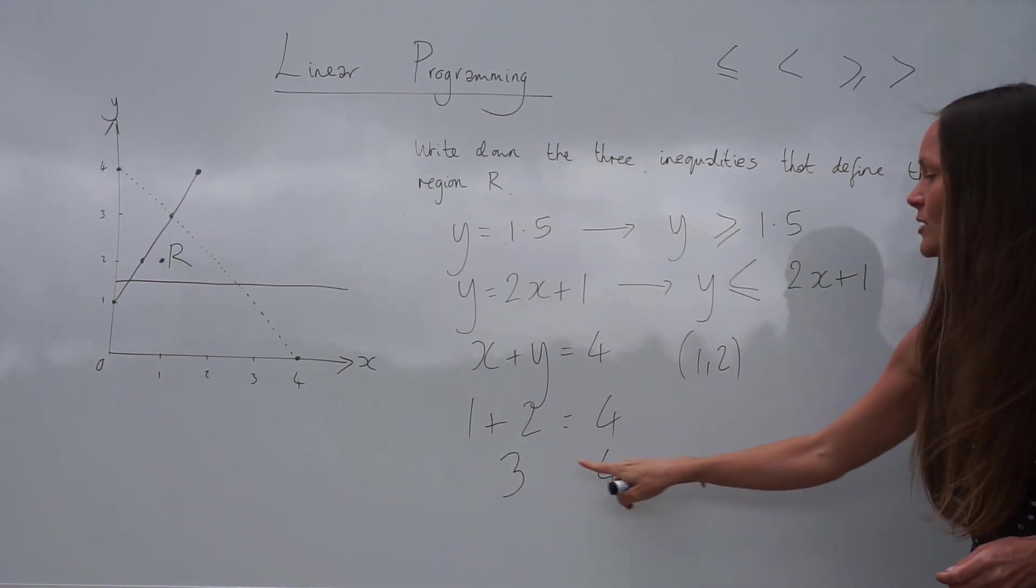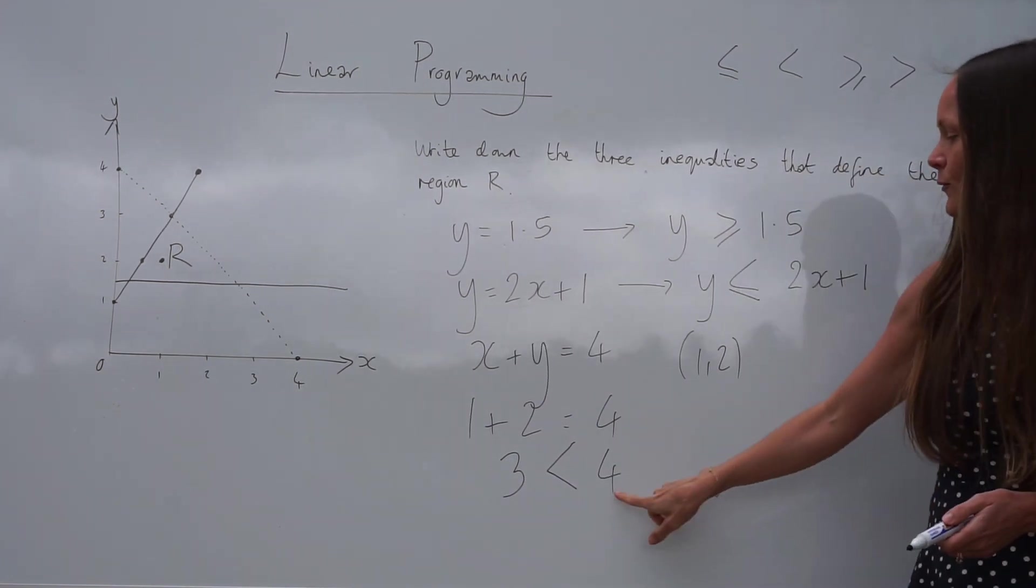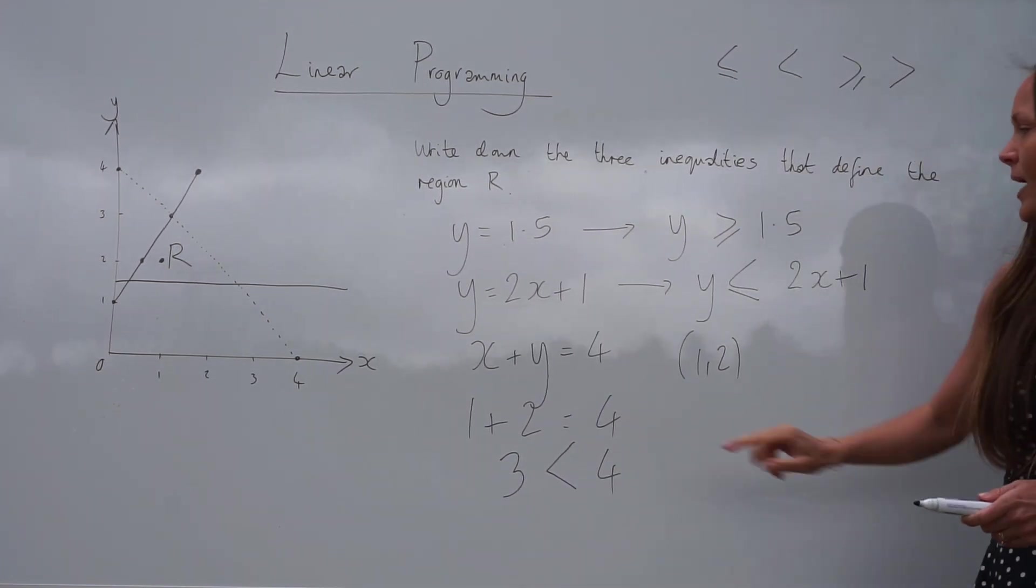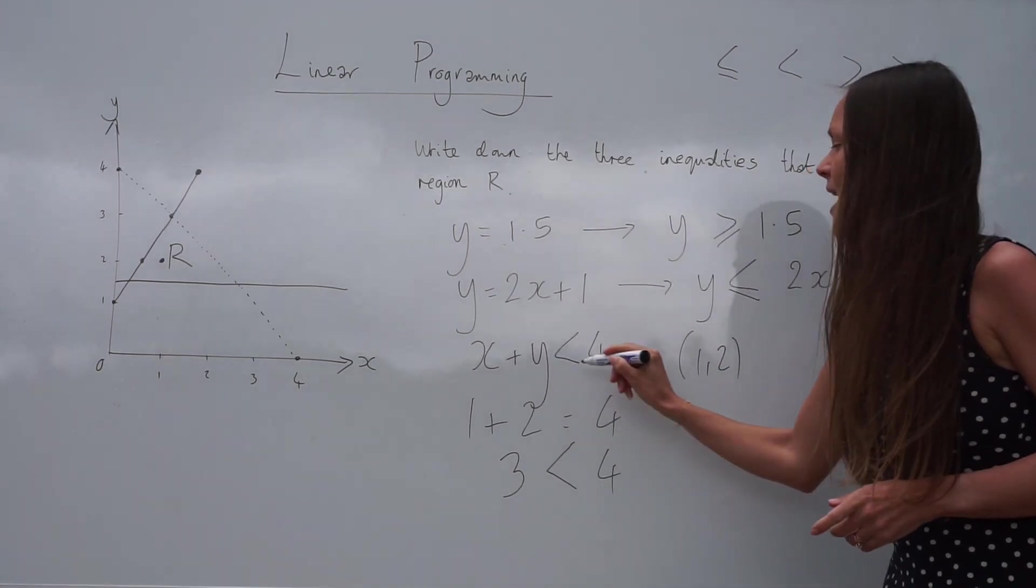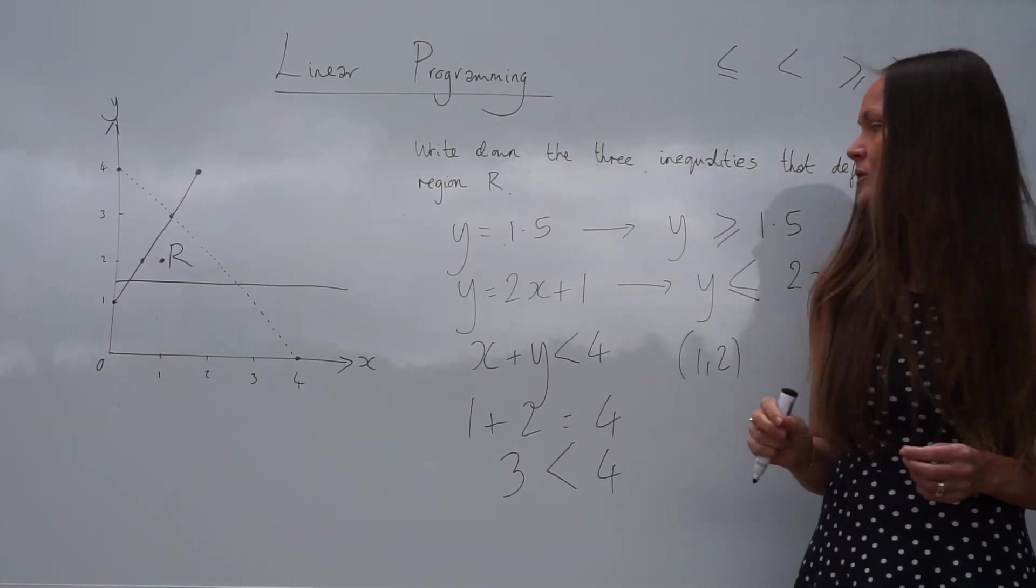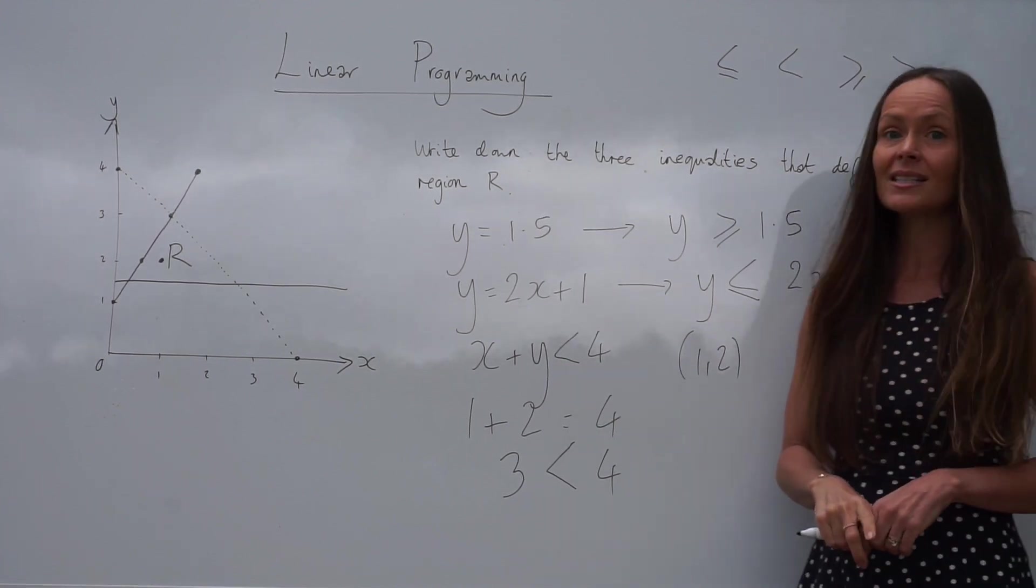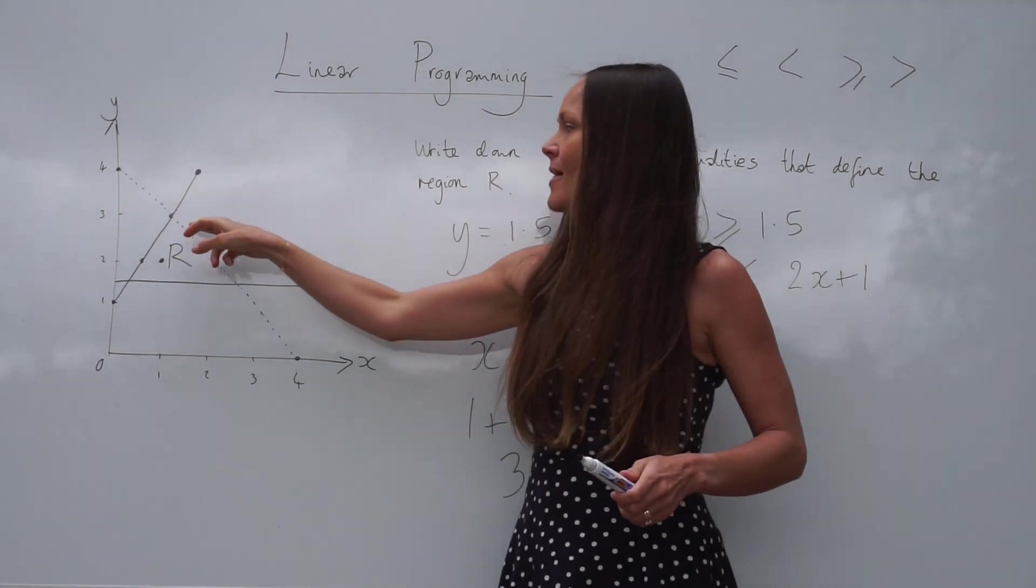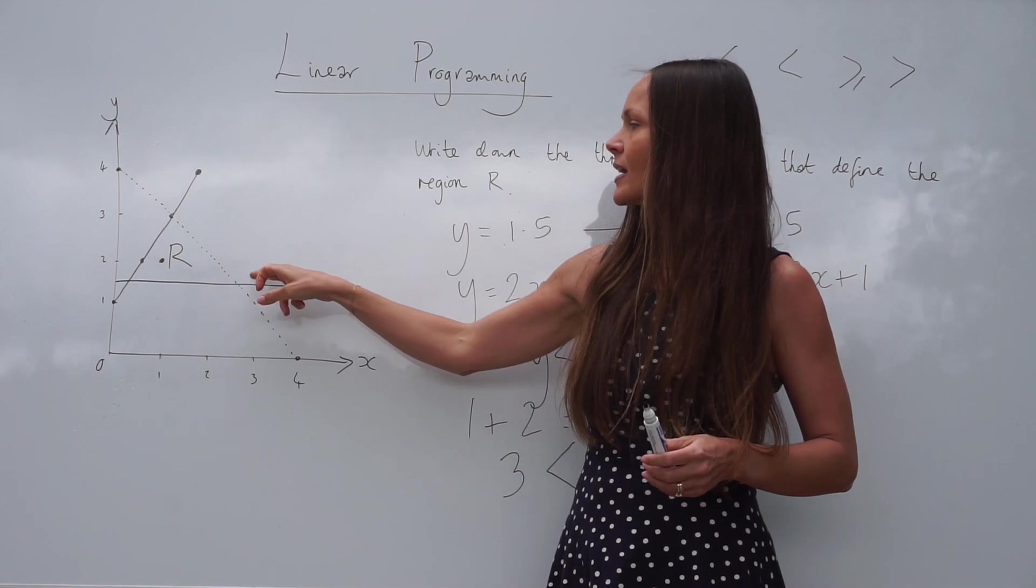Well, 4 is greater than 3. So the inequality sign is that way round. 4 is greater than 3. So I need to replace the equal sign with that. And this time, you don't add the equal sign to the inequality. Because this time, the line is dashed. And that means the region R does not lie on that dashed line.